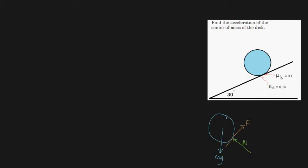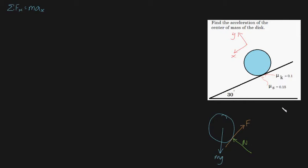Let's get started. First things first, we need to define an axis. I'm going to define an axis x down the slope and y normal to the surface. Let's start applying Newton's laws. We know that the sum of forces in our x direction is equal to the mass of your disk times your acceleration in the x direction. What are your forces in your x direction? Well, we've got our friction force, whatever it is, and we've got our component of our gravity force.